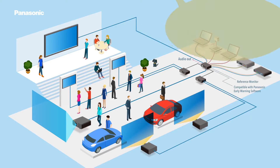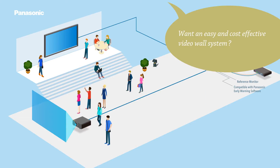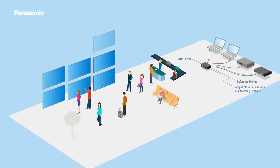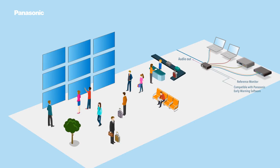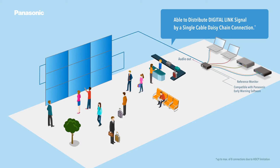Want an easy and cost-effective video wall system? You're able to distribute the Digital Link signal by a single cable daisy chain connection.